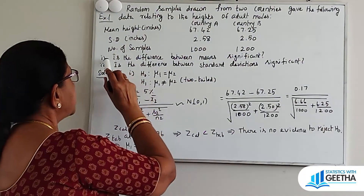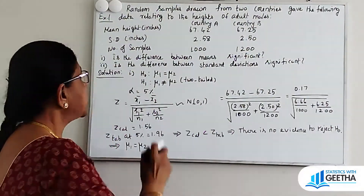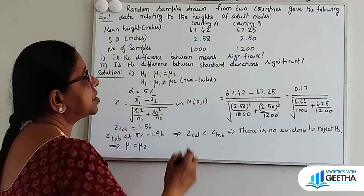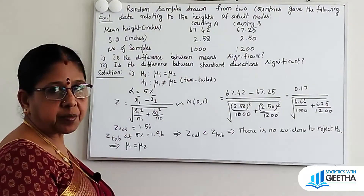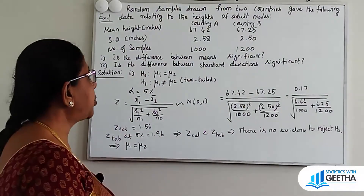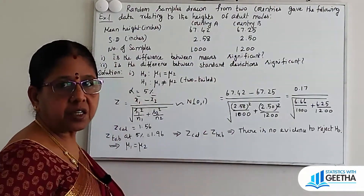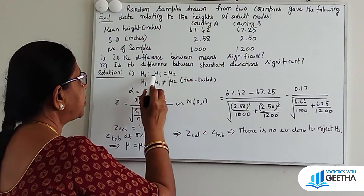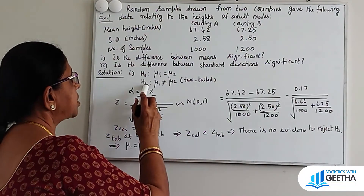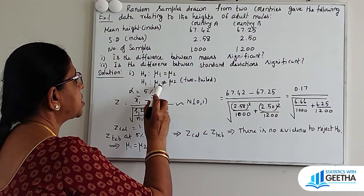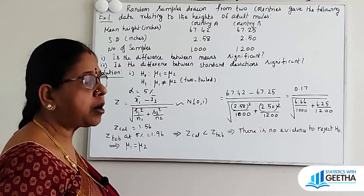Part 1: Is the difference between means significant? Part 2: Is the difference between standard deviations significant? For Part 1, the difference between means: H0: mu1 = mu2, against the alternative hypothesis H1: mu1 ≠ mu2. That is a two-tailed alternative. Alpha = 5%.